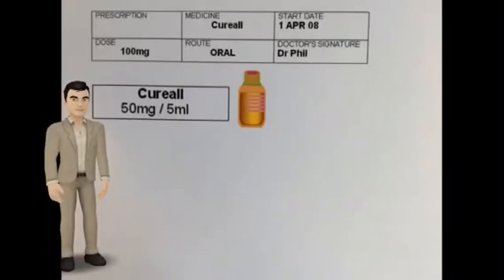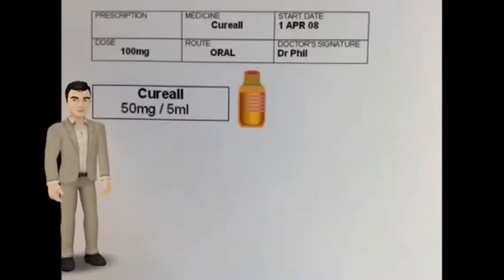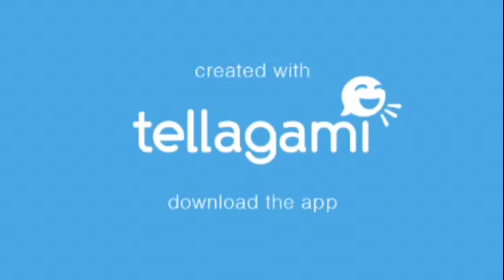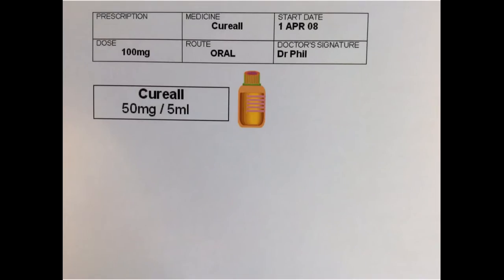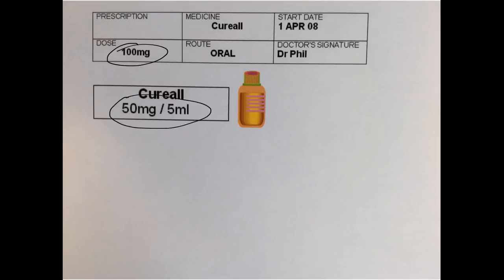Here is a prescription and a label from a bottle of cure-all syrup. How much cure-all do you give the patient? Your patient has been prescribed 100mg of cure-all. Cure-all is available as a 50mg per 5ml syrup. This means that there are 50mg of the drug in every 5ml of the syrup.